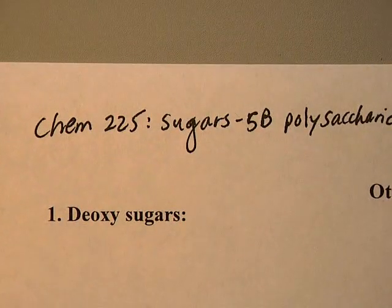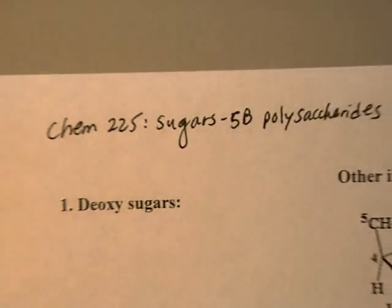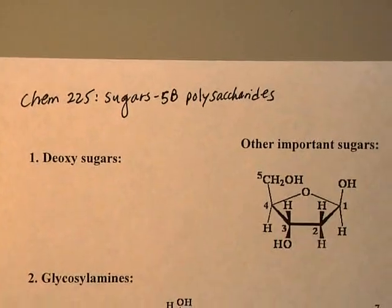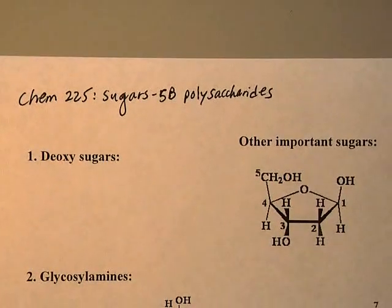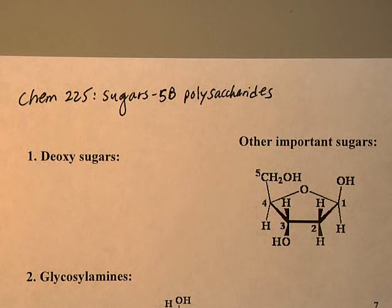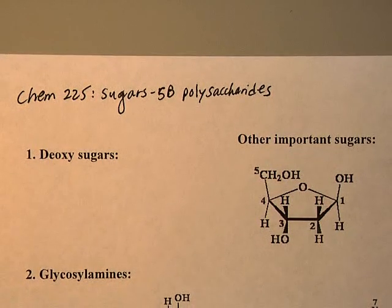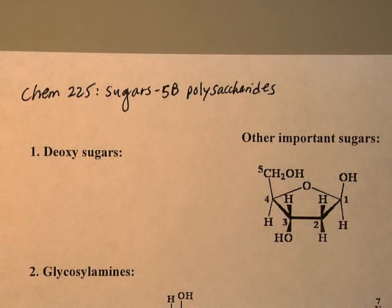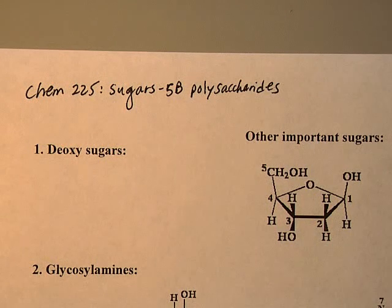This is the last lecture on sugars, and I'm going to be talking about important sugars we haven't covered yet. We stopped at the polysaccharides — cellulose for structure, and starch and glycogen for food. But you'll see sugars everywhere in nature, and these are some important sugars you should be able to recognize and know what function they have in our lives.